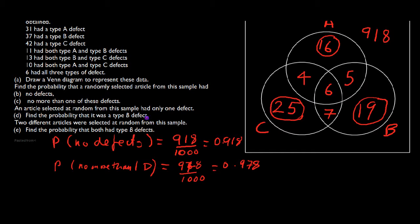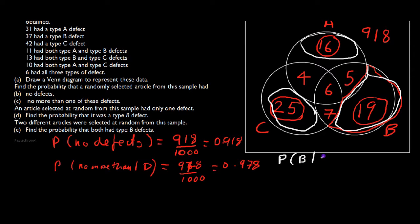Okay, let's look at part D. Find the probability that it was a type B defect. So we're going to be in this region here, only one defect for the B lot. Only the one defect of the A lot, and in this region here, only the C. So only one defect is going to be 16 plus 19 plus 25. So that gives me 60 with only one defect. And we want to find the probability that it was type B given that it was only one defect. And we got 19 out of 60 is the probability there for part D.